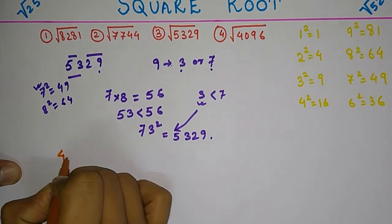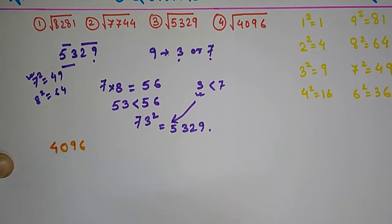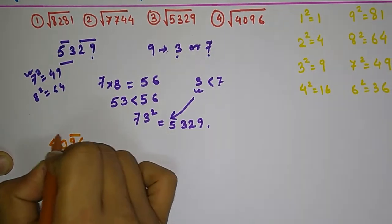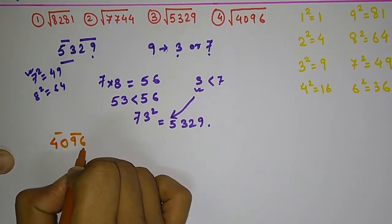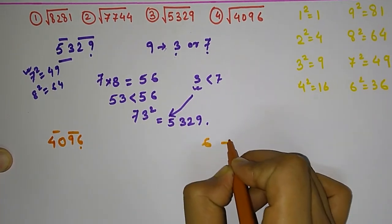We will have one more example, and that is 4096. Divide the number into pairs, then check the last digit. 6 comes from the square of 4 or square of 6.